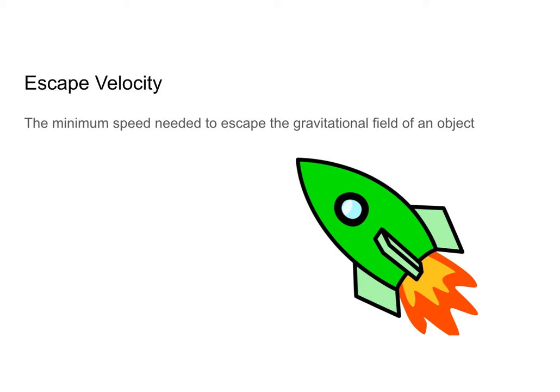So to begin with, escape velocity is defined as the minimum speed needed to escape the gravitational field of an object. Just a heads up — if we're looking at an electron orbiting a proton, instead of a gravitational field we could be looking at an electric field as well. But in this video we are going to just worry about gravitational fields.